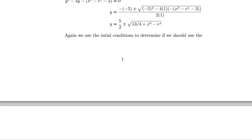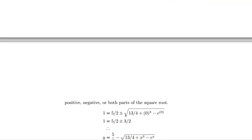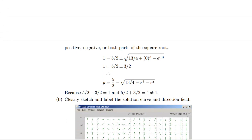At this point, we've got to use some differential equations. We have to apply the initial conditions to determine if we should use the positive, negative, or perhaps both parts of the square root. So we go ahead and do that. And we get that 1 equals 5 halves plus minus 3 over 2.